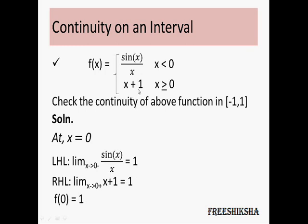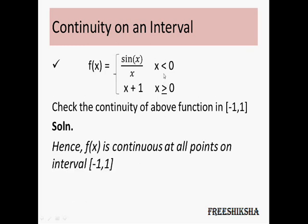The limit as x tends to 0-plus also equals 1, and at x equal to 0 the function gives 1, so the function is continuous at x equal to 0 as well. Hence f(x) is continuous at all points on the closed interval [−1, 1]. This is the way by which you find the continuity of a function on an interval, at a point, and what is the significance of continuity. Thank you so much.